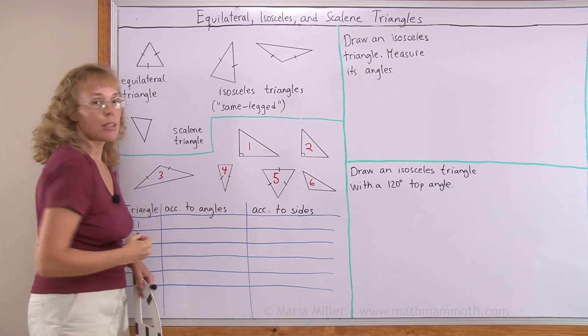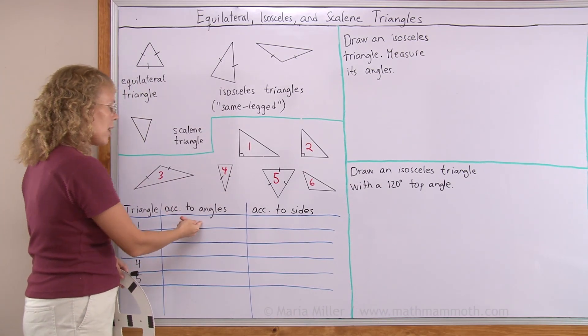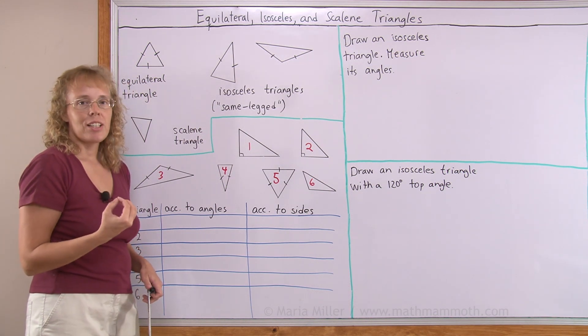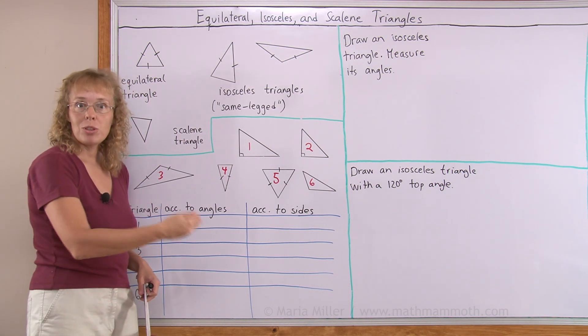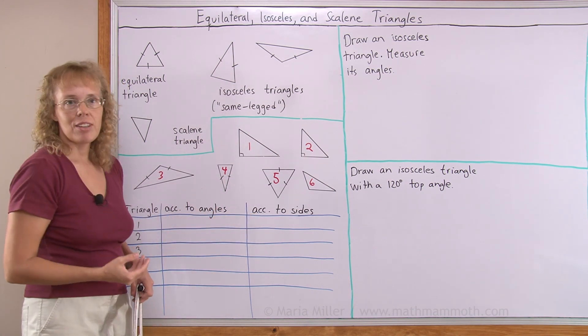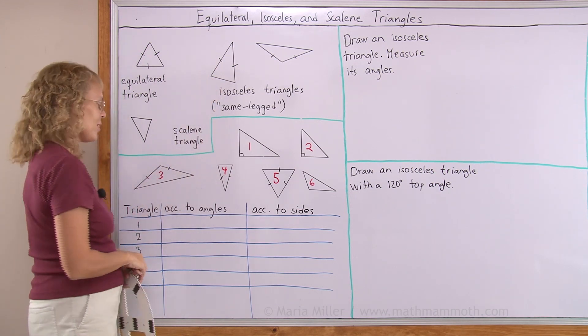Here we have six triangles that we need to classify according to the sides and according to the angles. According to the angles, we classify triangles as acute, obtuse or right. And according to sides, we classify them as equilateral, isosceles or scalene.